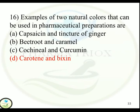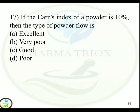Question 17: If the Carr's index of a powder is 10%, then the type of powder flow is — Option A: Excellent. Option B: Very poor. Option C: Good. Option D: Poor. Correct answer is Option A — Excellent.